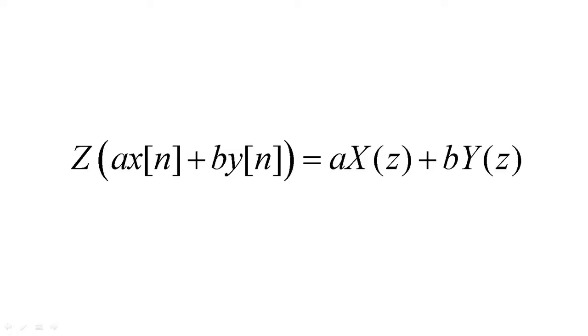The Z-transform is a linear function. Linearity tells us that we can add Z-transforms of different sequences together, and we can scale Z-transforms by constants.